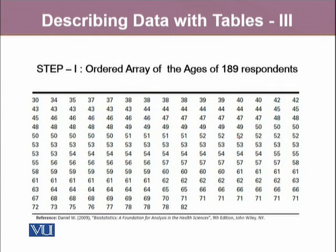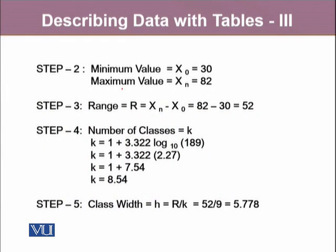The very first step is to construct an ordered array of the ages of 189 respondents, where the minimum value is 30 and the largest value is 82. If 37 repeats twice, it is ordered accordingly, and so on for other values. In step 2, we define the minimum value, denoted by X0, and the maximum value, denoted by Xn. In step 3, we calculate the range.